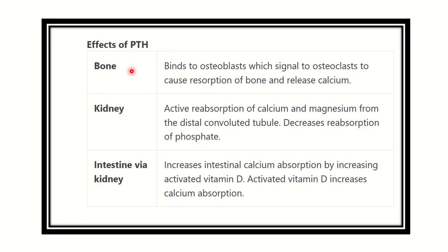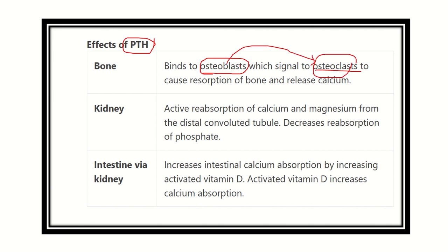First, parathyroid hormone acts on the bone, and from the bone it releases calcium and phosphate. PTH first binds to the osteoblast, because PTH has no receptor on the osteoclast. The osteoclast is activated by the osteoblast. For bone resorption and release of calcium from bone into the blood, the osteoclast is needed.